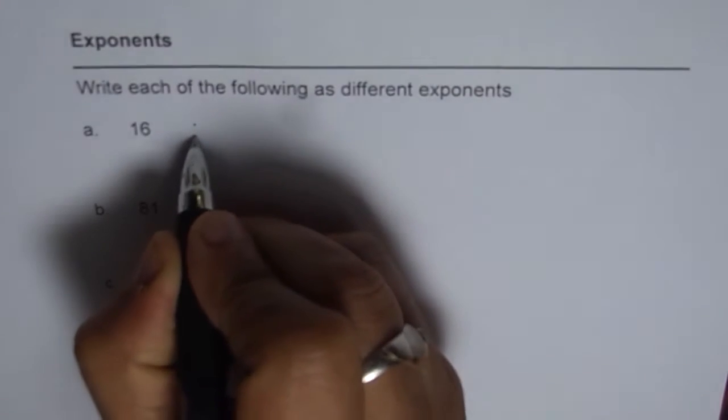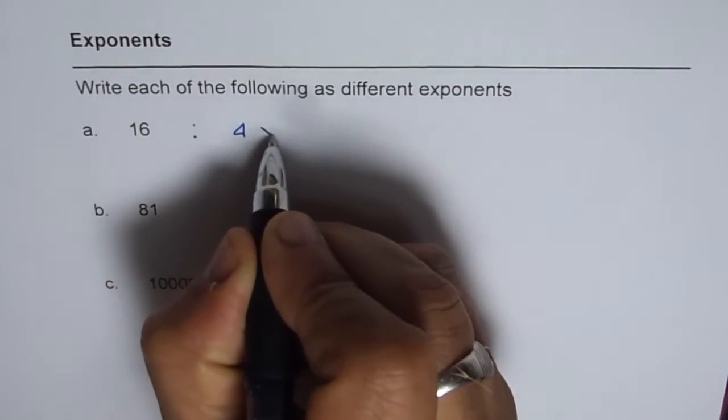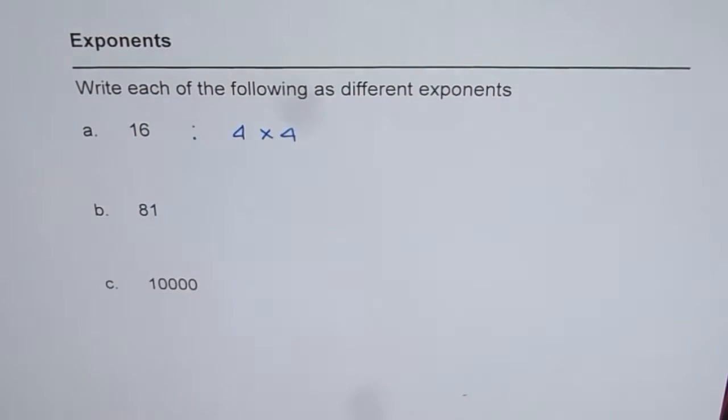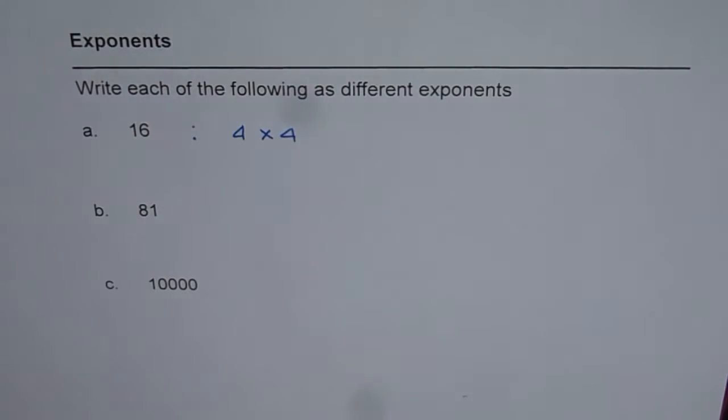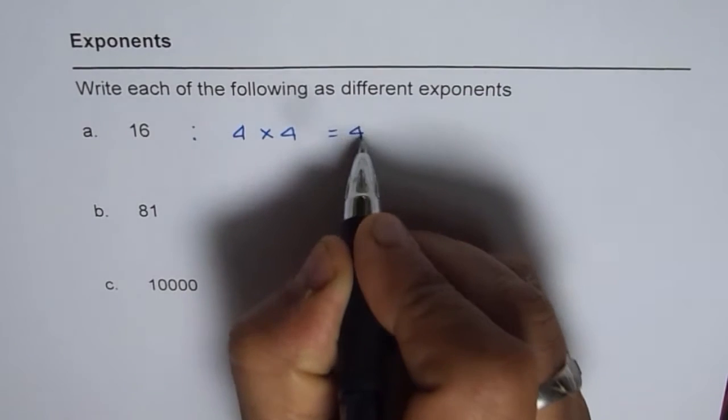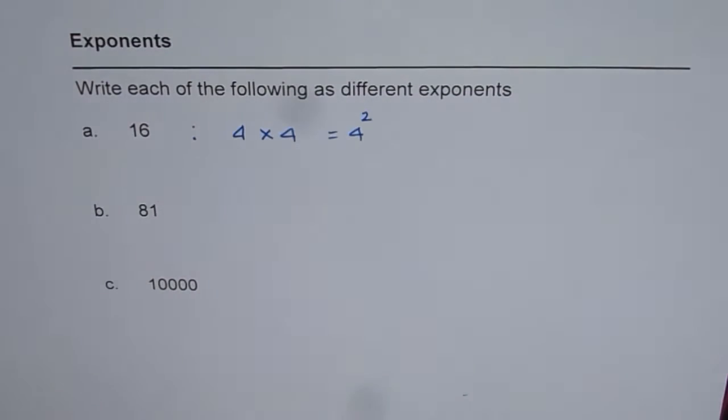We could write for example 16 as 4 times 4. Now 4 times 4 is 16, which is same as 4 squared. So that is one way of doing it.